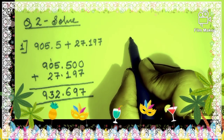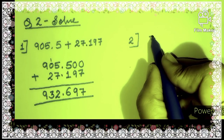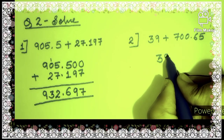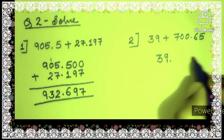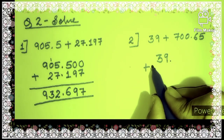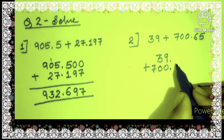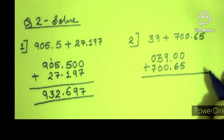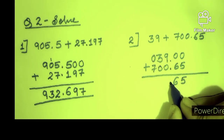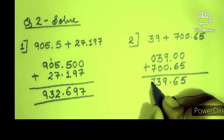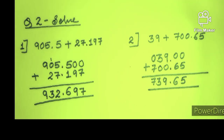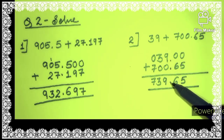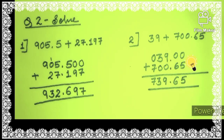Let us see the second question: 39 plus 700.65. We write 39 first and put the decimal point after it. Then write 700.65 below — point below point. We put zeros where needed; the value will not change — it is 39 only. So we add it: the answer is 739.65. You just have to put the same place values one upon the other. The decimal point alignment is very important.